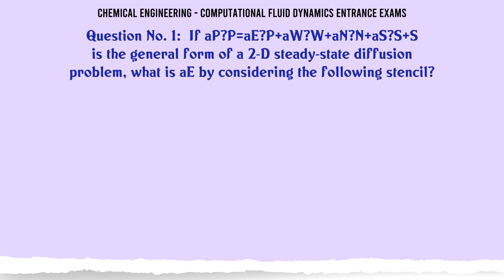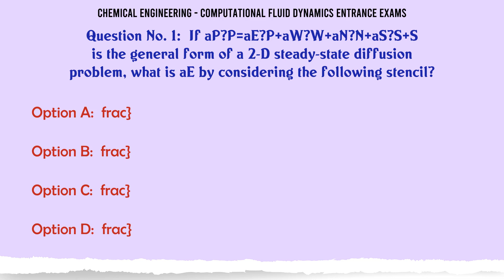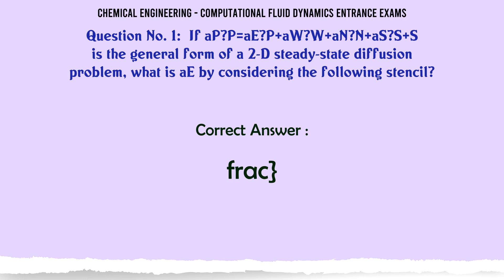If a_P * phi_P = sum(a_nb * phi_nb) + S is the general form of a 2D steady-state diffusion problem, what is a_E by considering the following stencil? A. (gamma * A_AE) / delta_Y_PE. B. (gamma * A_AE) / delta_Y_PE. C. (gamma * A_AE) / delta_X_PE. D. (gamma * A_AE) / delta_X_WPE. The correct answer is C: (gamma * A_AE) / delta_X_PE.